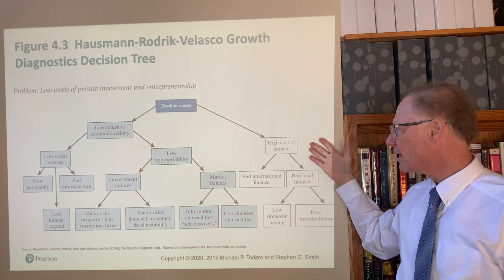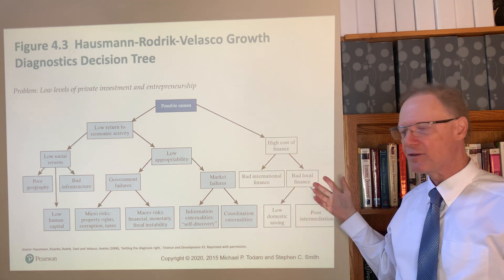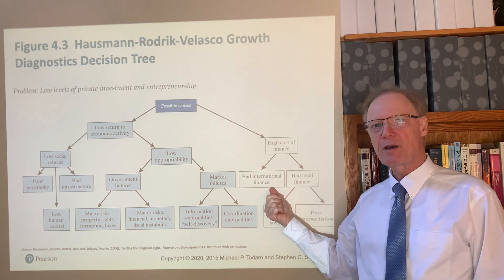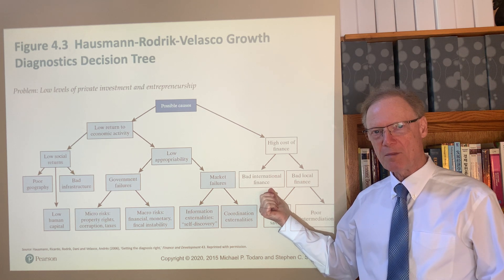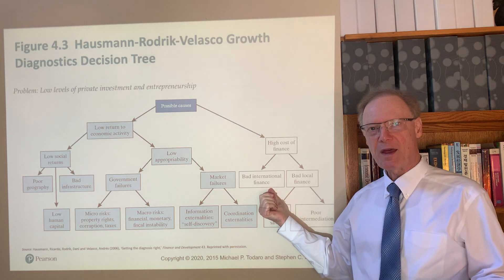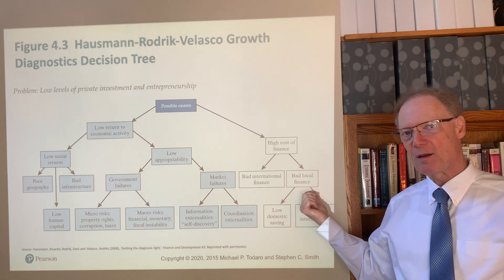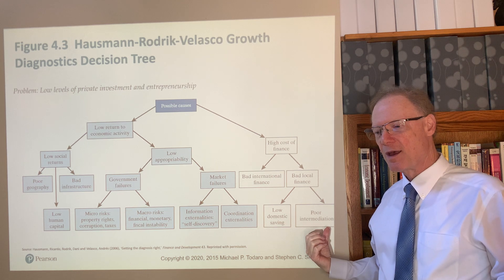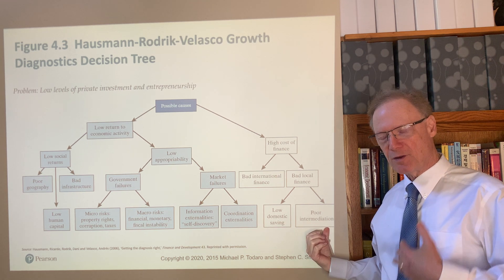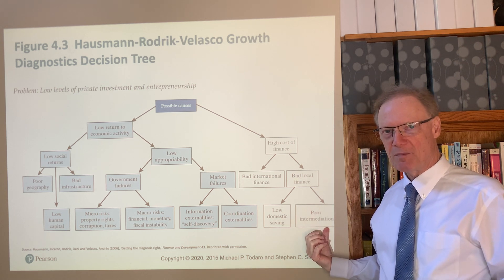The costs of finance can come from two sources: one is international and one is domestic. Inability of the economy to bring in foreign investment or borrow on foreign markets is something that might be addressed with policy — it may be the result of poor policies. There are also possible problems of bad local finance, such as low savings or poor financial intermediation — banks and other financial intermediaries that don't do a very good job of getting resources from the savers who have the money to the borrowers who have productive uses for it.